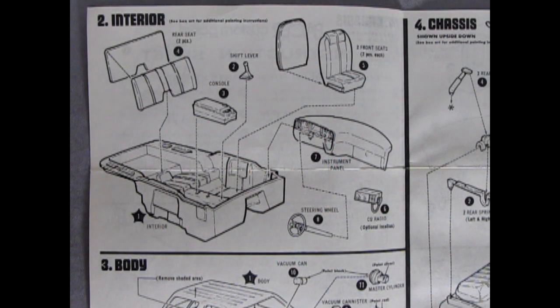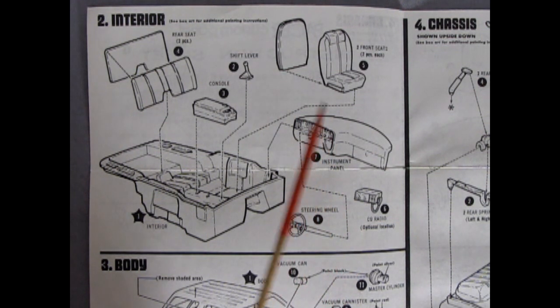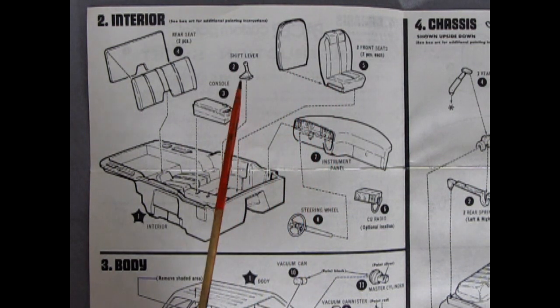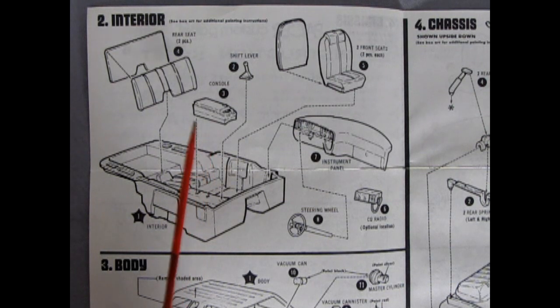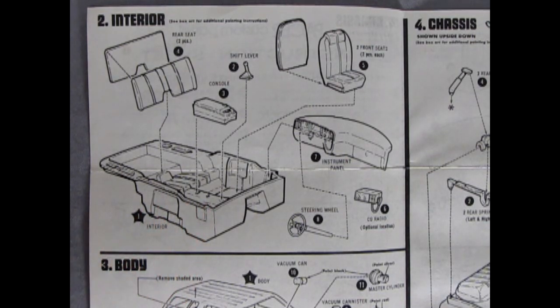Panel 2 shows our interior being assembled. Here we have our steering wheel which goes into the instrument panel. We've got a CB radio which was very popular in the 70s and its location is optional. Then we've got our two front bucket seats which have a front and a back to them. There's a shift lever, there's a center console, and then our rear back bench seat has a front and a back as well which all go into this interior pan.